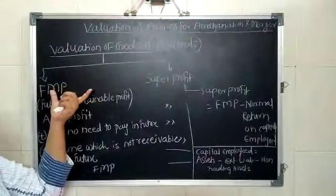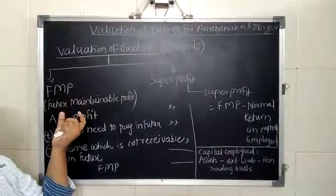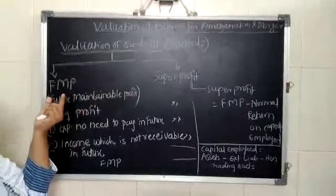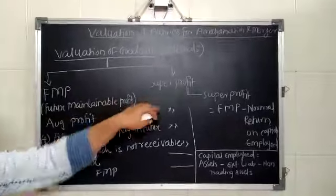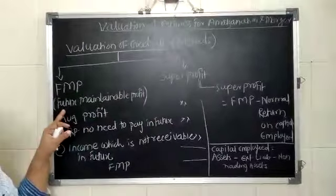So here we are going to learn two methods to calculate goodwill, that is FMP method and super profit method. Now what is meant by FMP?